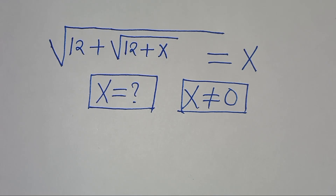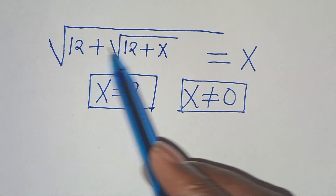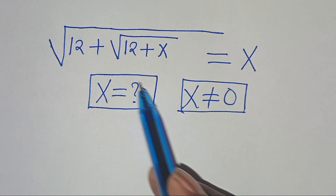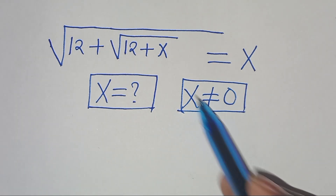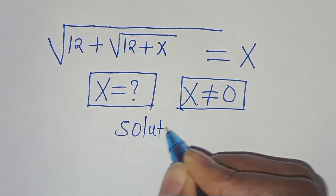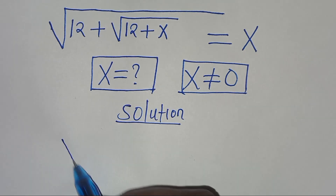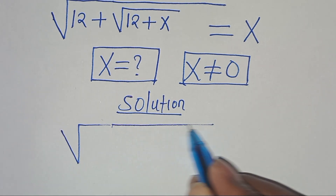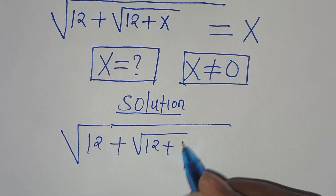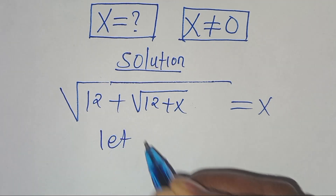Hello everyone, welcome to solve this nice square root math problem: the square root of 12 plus the square root of 12 plus x, equals x. What are the values of x, given that x is not equal to 0? Let's present a solution from here. We have the square root of 12 plus the square root of 12 plus x, equal to x.